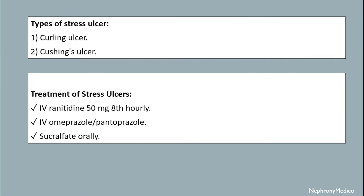Types of stress ulcer: it may be a Curling ulcer or a Cushing ulcer. Treatment of stress ulcer: IV ranitidine 50 milligram is given hourly. IV omeprazole or pantoprazole can be given, and sucralfate is given orally.